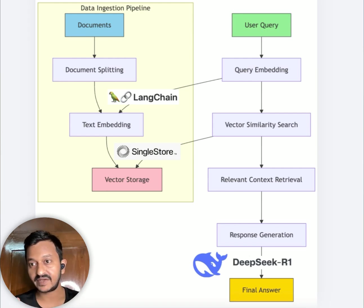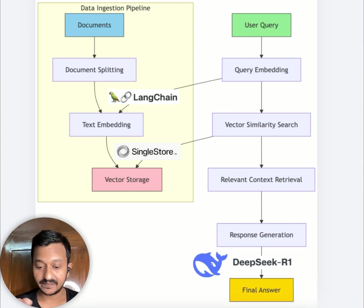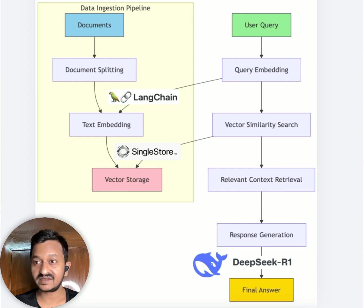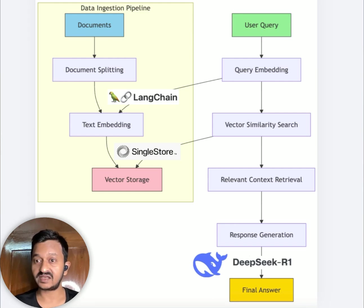If anybody is new and doesn't know what DeepSeek R1 is - it's an LLM developed by DeepSeek AI that uses reinforcement learning to enhance reasoning capabilities. It is one of the state-of-the-art LLMs, recently known for its chain of thought capabilities, reasoning capabilities, and performance capabilities. Recently it's being compared with the best known LLM models around the world, and it looks like DeepSeek R1 is beating most of them.